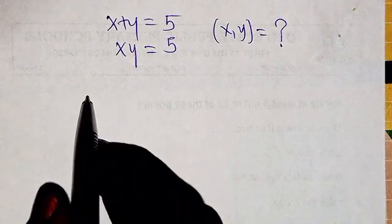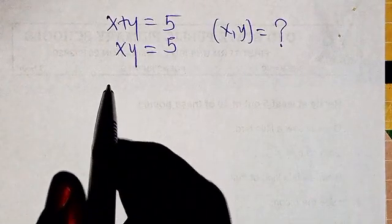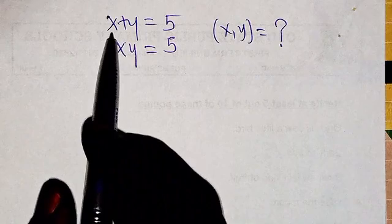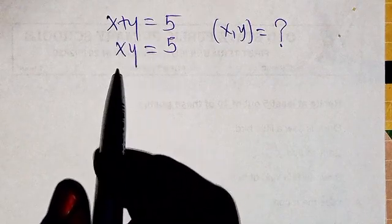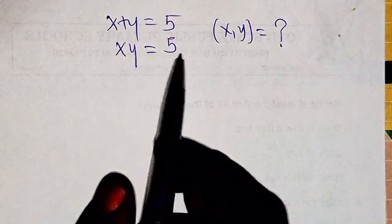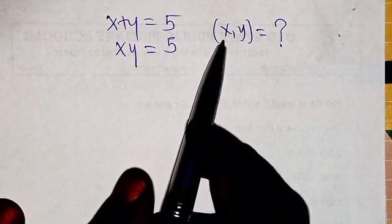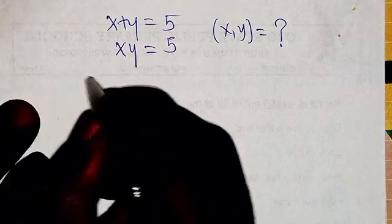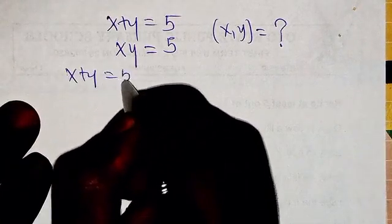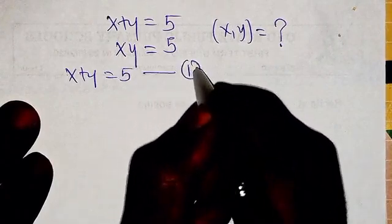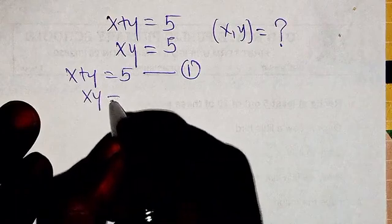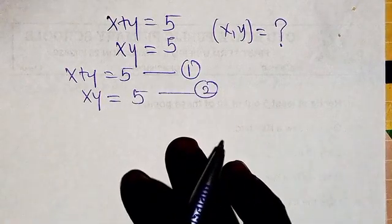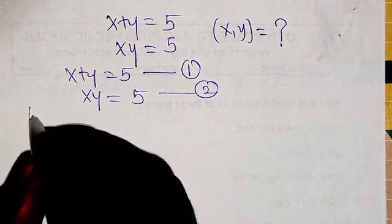Hello, good viewers, you are highly welcome to this tutorial. We are going to be solving this system of equations. We have x plus y equals 5, and x times y equals 5. So what are the values of x and y? From here, x plus y equals 5 is equation one, and x times y equals 5 is equation two.